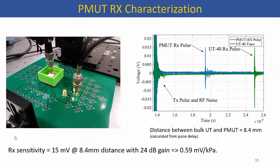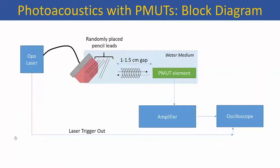For basic characterization, without going into details about LDV or impedance measurements, we were interested in underwater operation. So we used a bulk ultrasound transducer, threw sound from the top, and verified that the PMUT can listen to the sound — confirming it works in principle. We also estimated the received sensitivity by knowing the pressure generated by the bulk transducer as measured by a hydrophone, and combining that with the voltage received. The received sensitivity came out to around half a millivolt per kilopascal, which is very low. So there is a lot of scope for improvement in these transducers, and we have achieved that as I will show later.